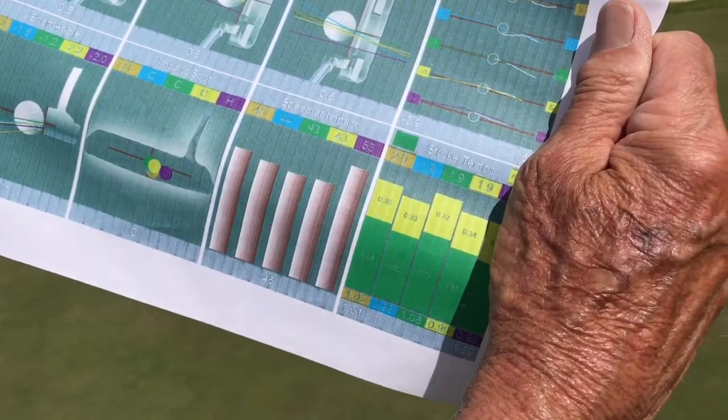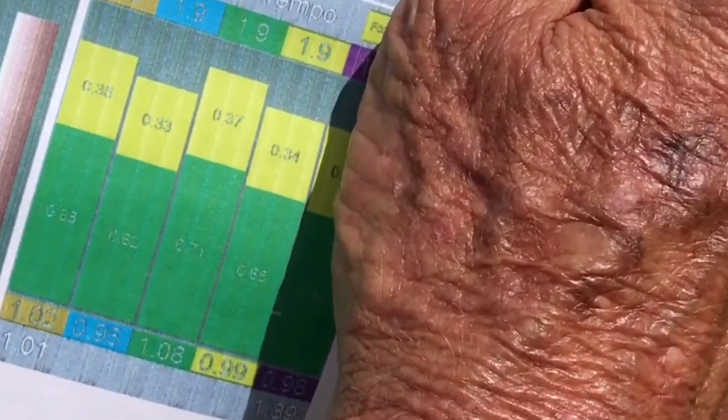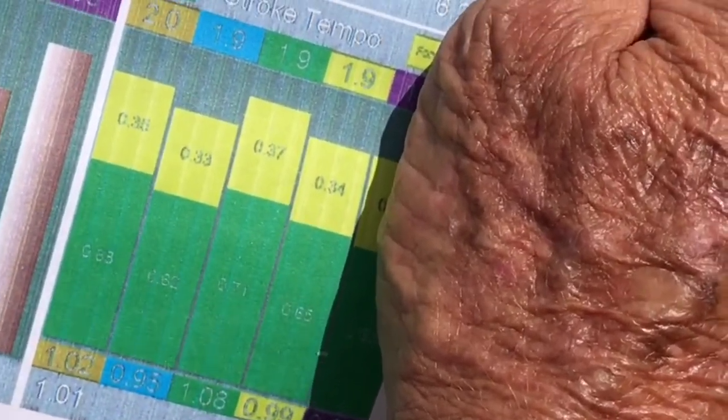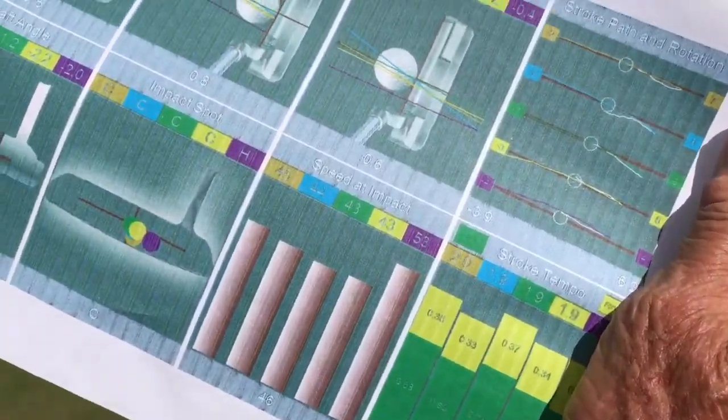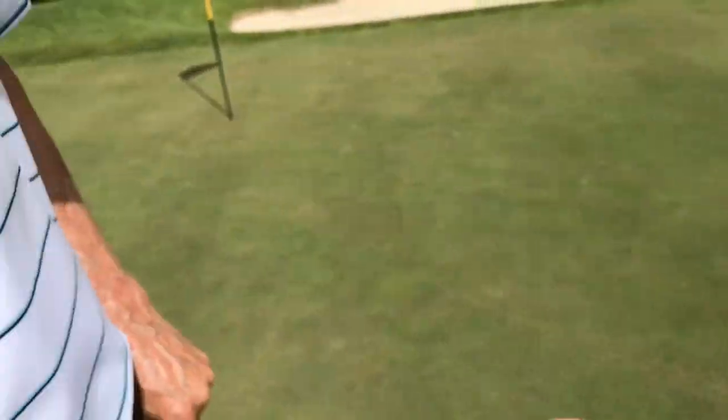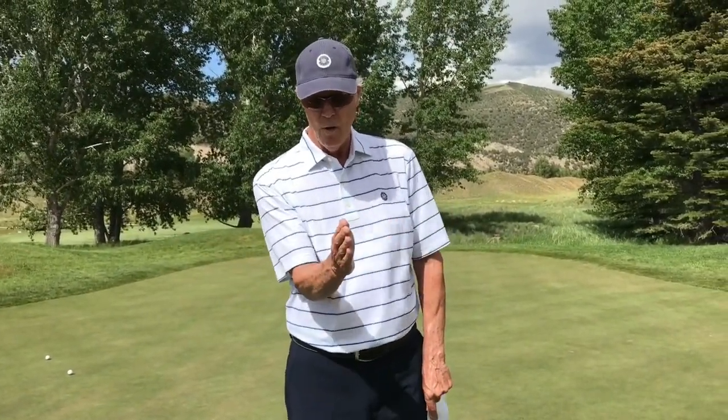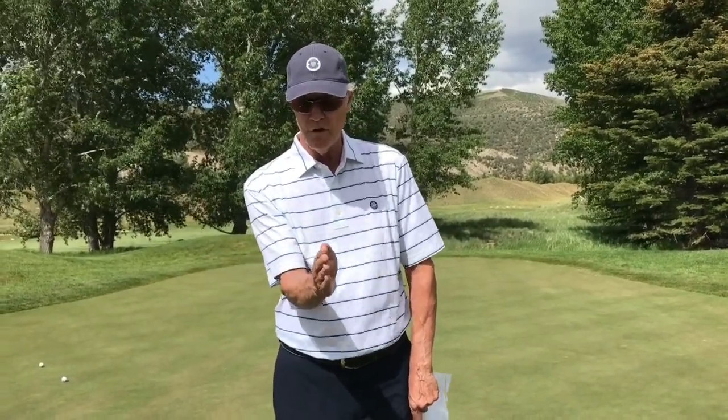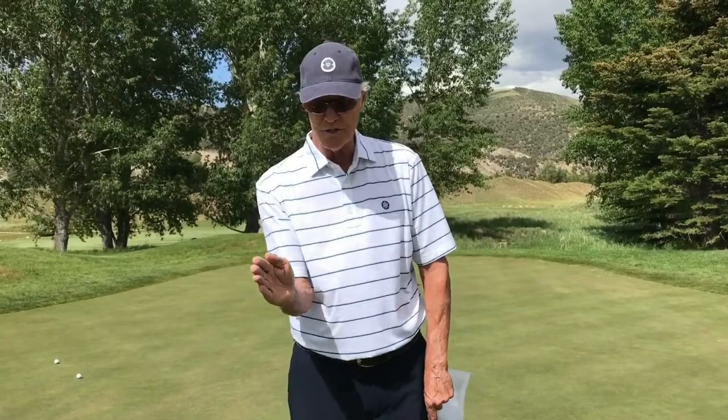And finally, swing and stroke tempo. You want to have a two to one ratio. It should take you half as far and half as long in the backswing as the forward swing. The stroke tempo is in a ratio one to two. If you're going back from a position zero to one, your downswing is one to two.